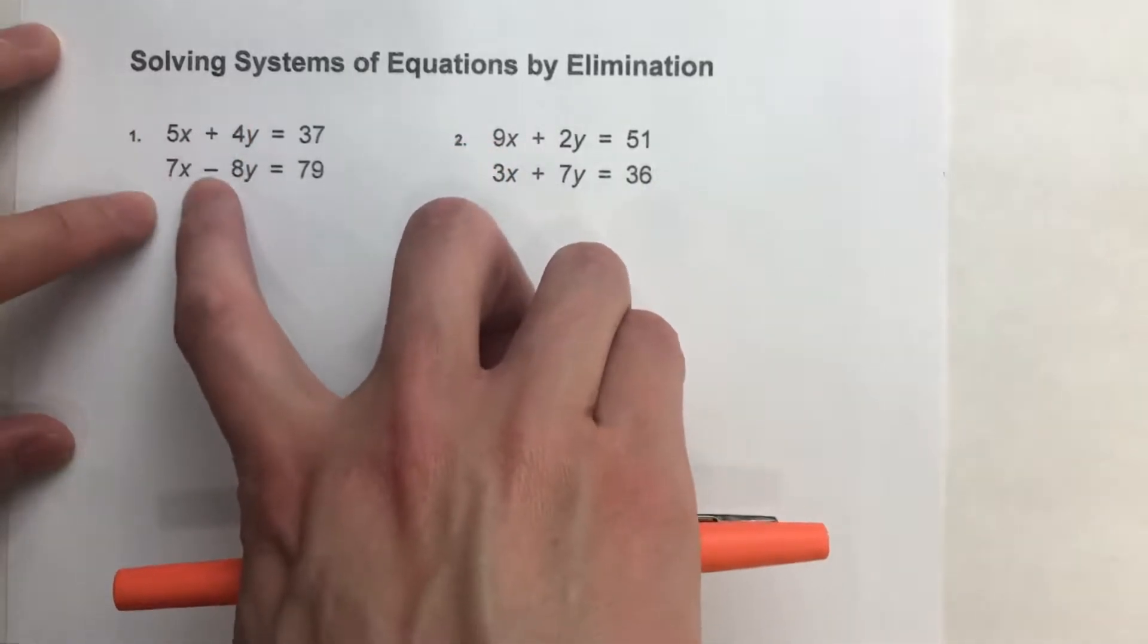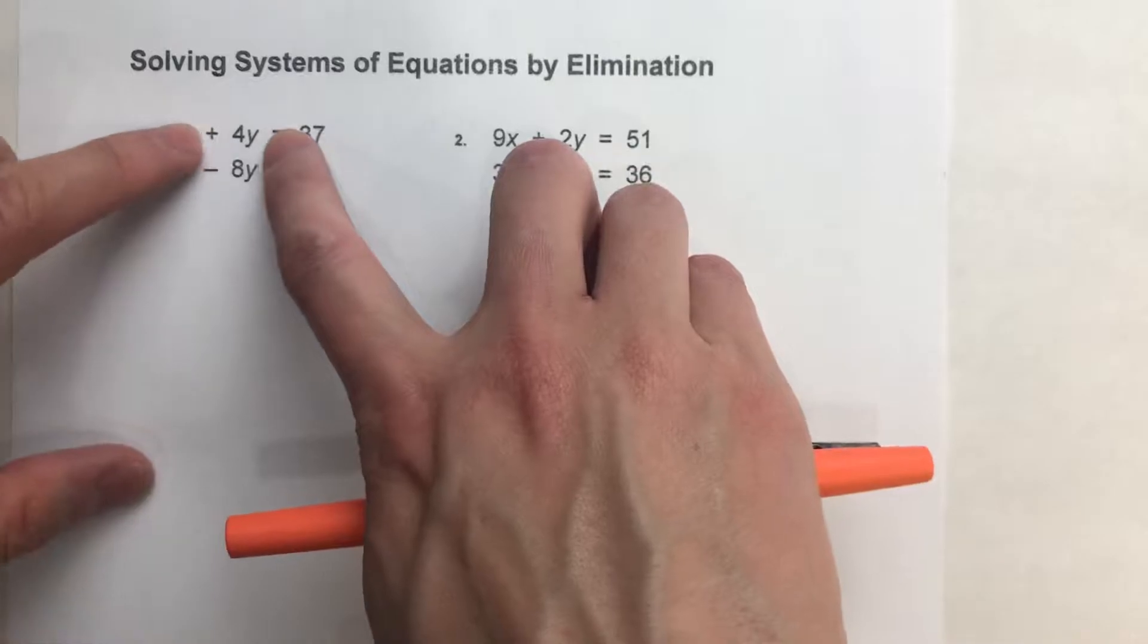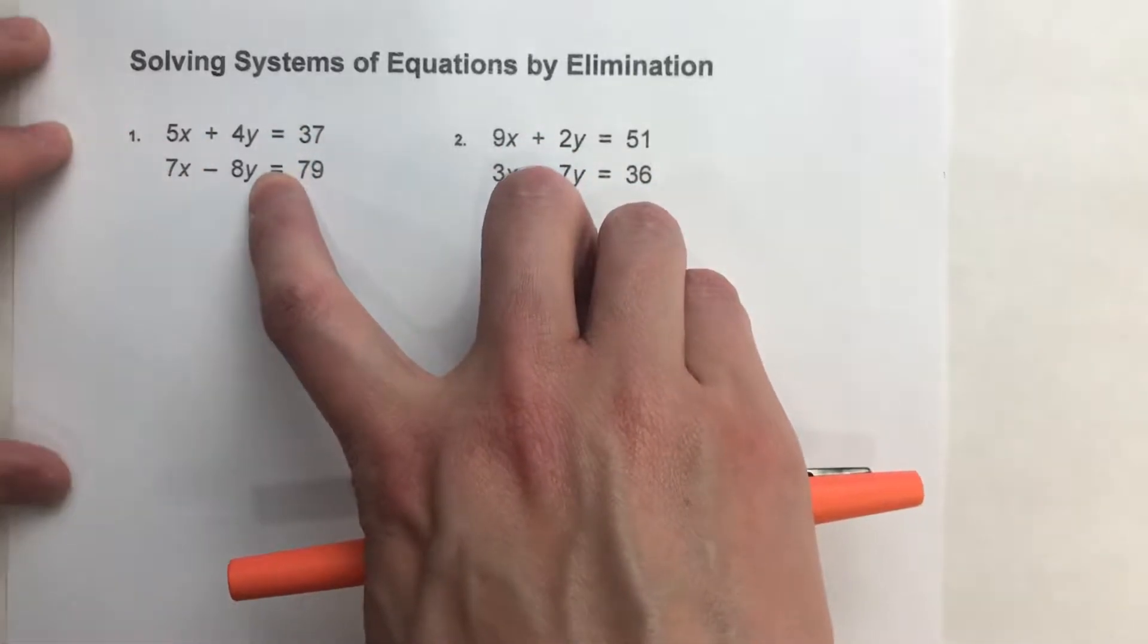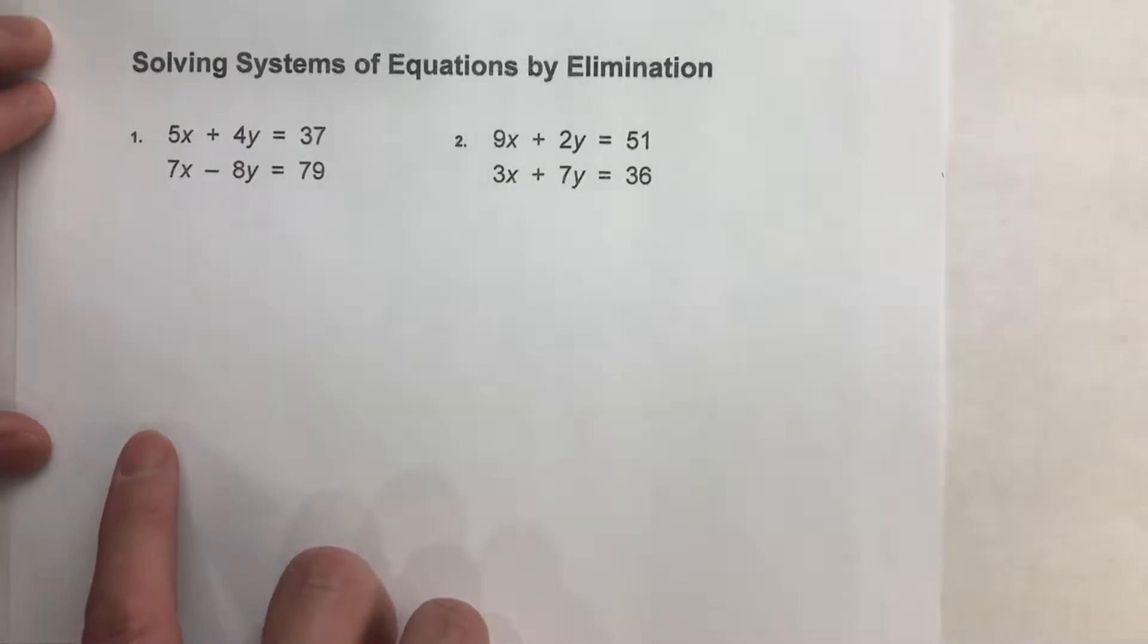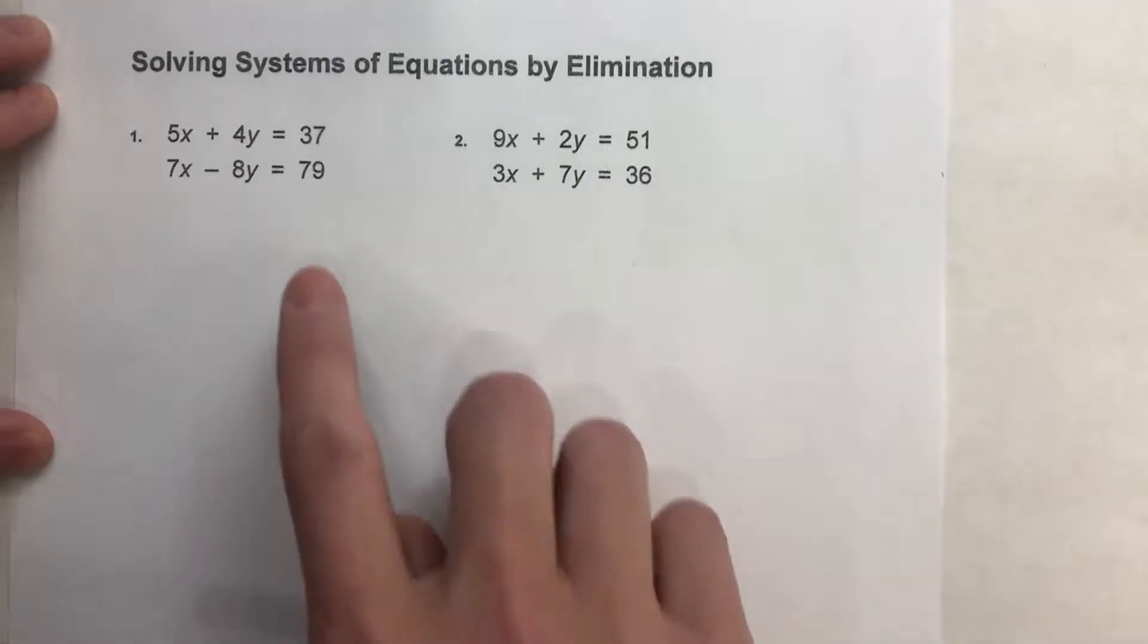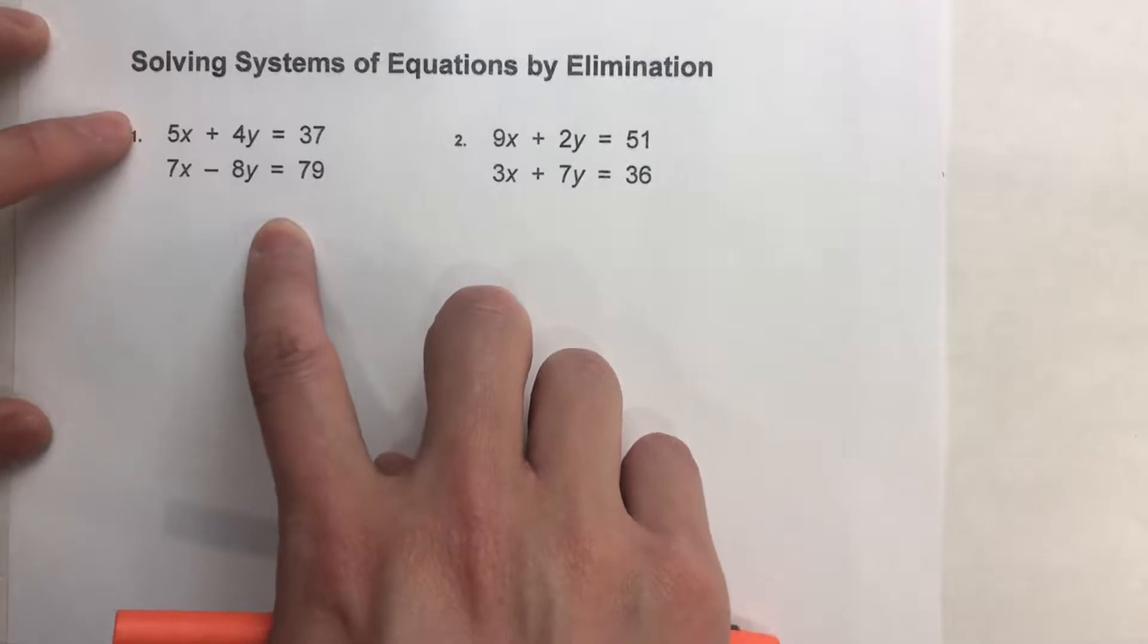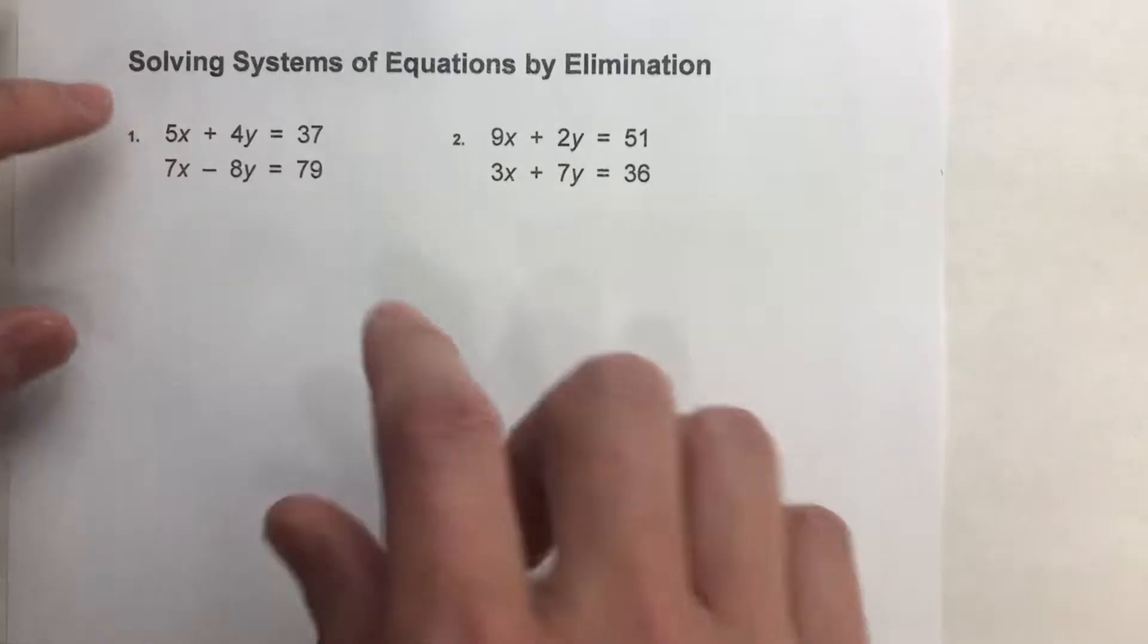You've got 5x here, 7x here. You've got 4y here and negative 8y there. So adding these two equations is not going to eliminate any variables. So what we can do is multiply one of these equations by a number so that we do have that situation.